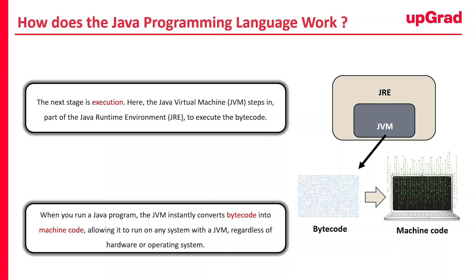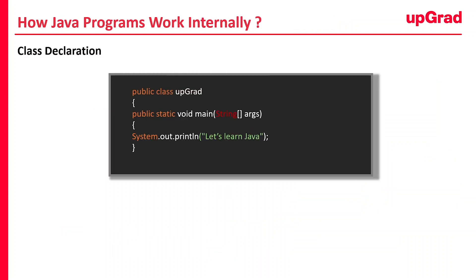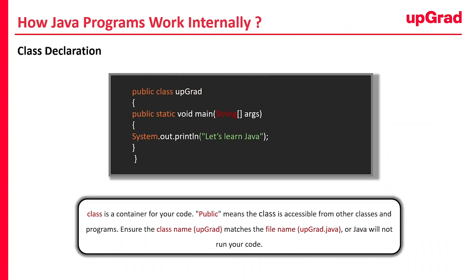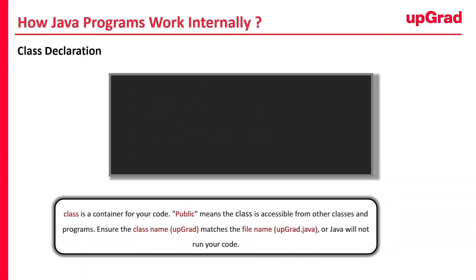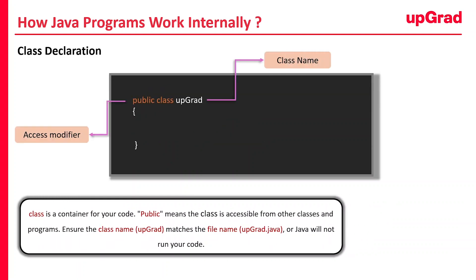So that was about how Java works. But what exactly happens under the hood when you run a Java program? Let's take a closer look at how Java programs work internally, step by step. The first thing you see is the class declaration: public class Upgrade. Think of a class as a container that holds your code. Here we are naming our class Upgrade. Public is an access modifier which indicates that this class is accessible from other classes, meaning other parts of your program or even other programs can use it if needed. Your class name Upgrade needs to match your filename, that is Upgrade.java — if they don't match, Java will get confused and won't run your code.